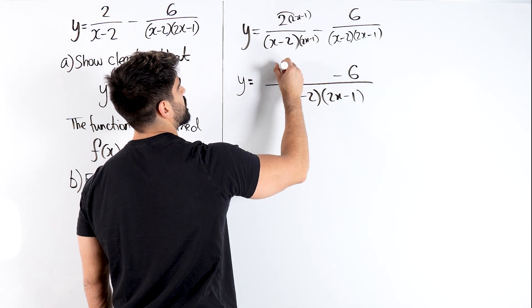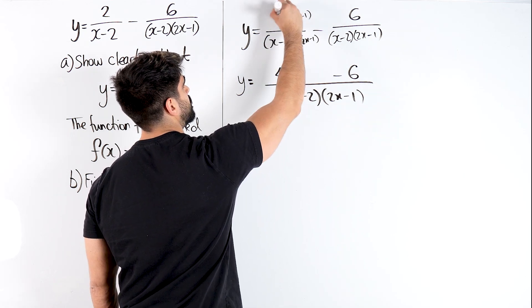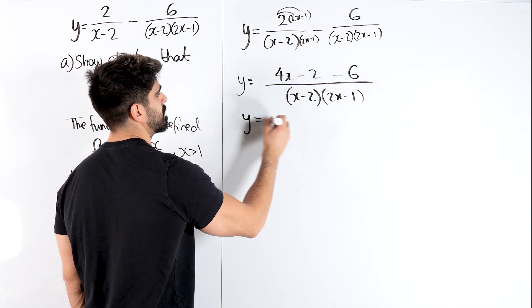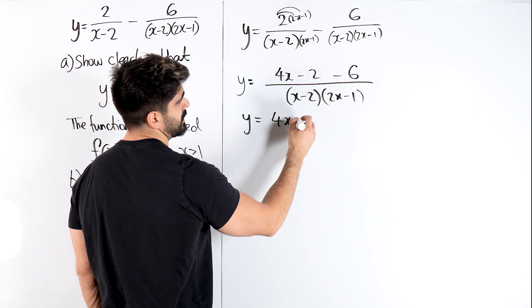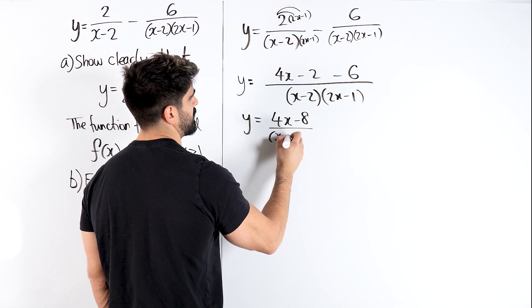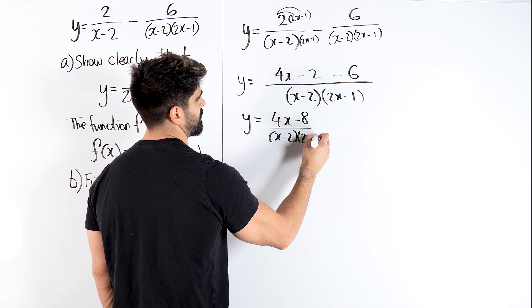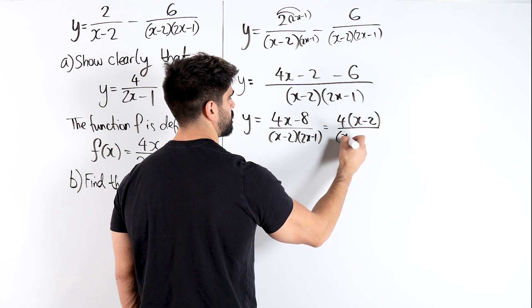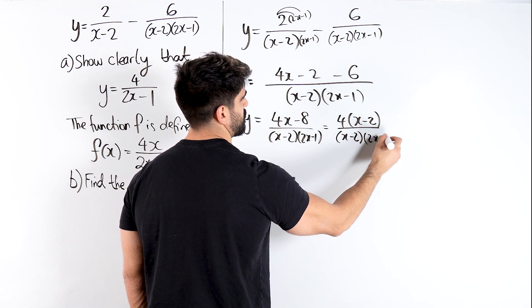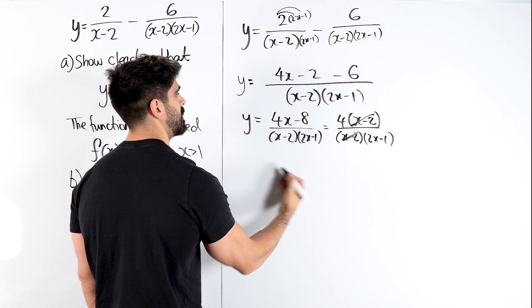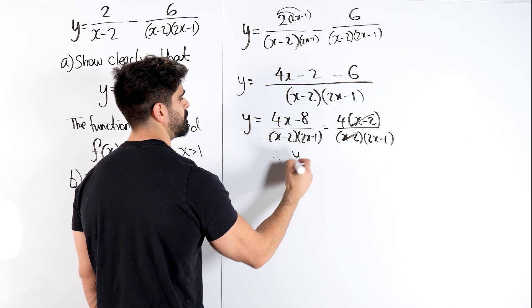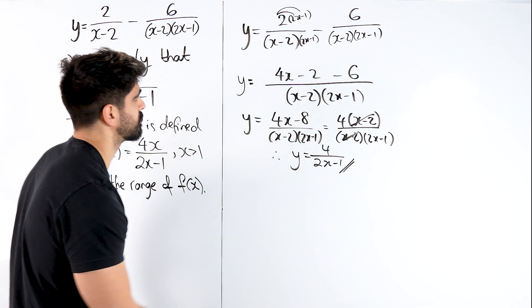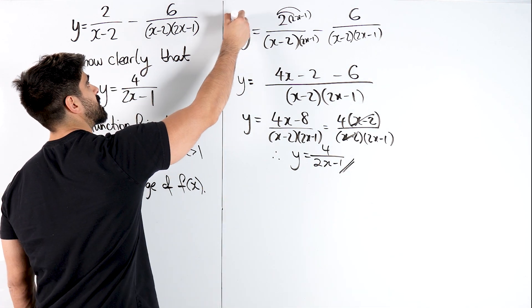Let's expand that so we get 4x minus 2. So we get y = (4x-8) over (x-2)(2x-1). We can factorize out the 4 to get 4(x-2). Then we can see the cancellation and that's shown. So we're left with y = 4/(2x-1). Typically in the exam this would be three marks. That's part A done.